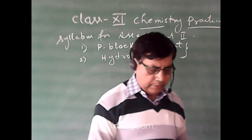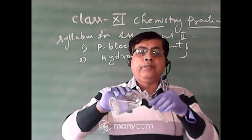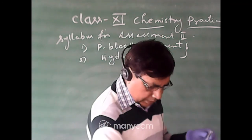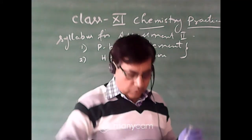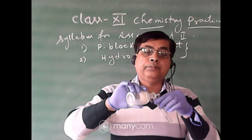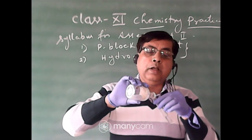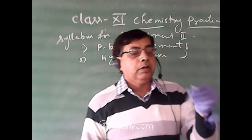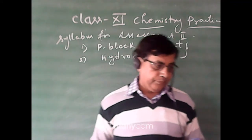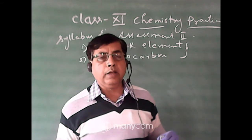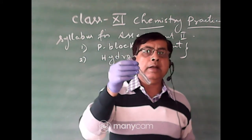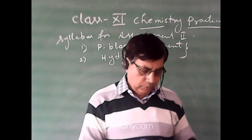Now perform the Group 3 test. The Group 3 reagent is ammonium chloride and ammonium hydroxide. First add ammonium chloride, then add a small amount of ammonium hydroxide — do not add excess ammonium hydroxide. No white PPT is formed here, which means Group 3 is absent.